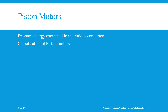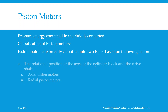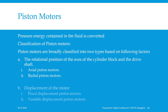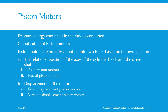Upon classification of piston motors, they are broadly classified into two types based on the following factors. Primarily, the relational position of the axis of the cylinder block and the drive shaft — based on that we call it axial piston motors as well as radial piston motors. The next classification is based on displacement of the motor, which can be further subclassified as fixed displacement piston motors and variable displacement piston motors.